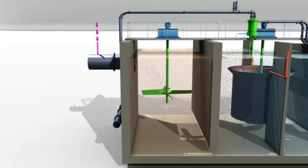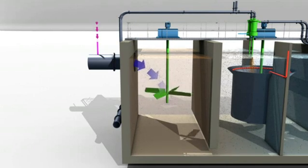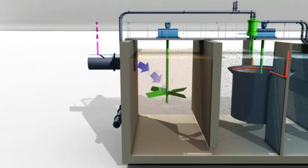After coagulant addition, raw water enters the coagulation tank under vigorous mixing to initiate flock formation.